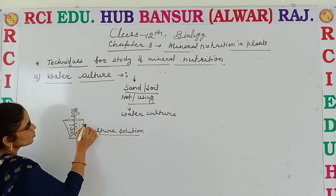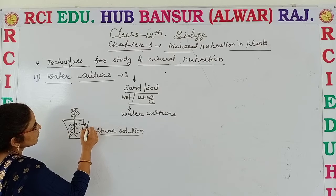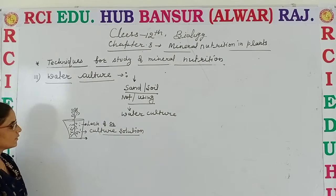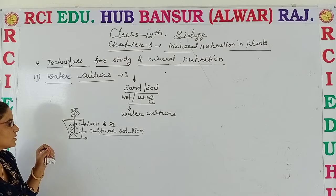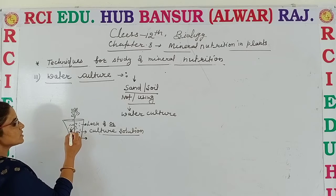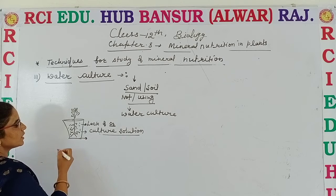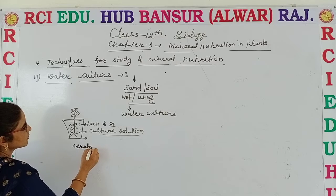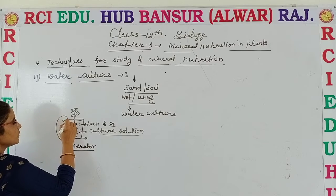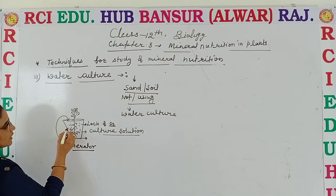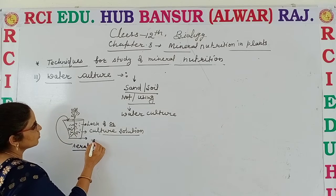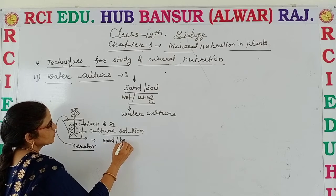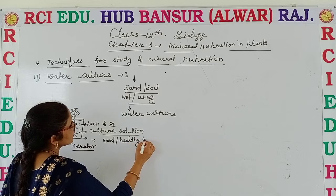In the beginning, the nutrition solution is devoid of oxygen — it lacks oxygen. We are not adding oxygen to the culture solution initially; other minerals are already present. Then we add oxygen with the help of an aerator. When we add the oxygen and all minerals are available, the plants show good and healthy growth.